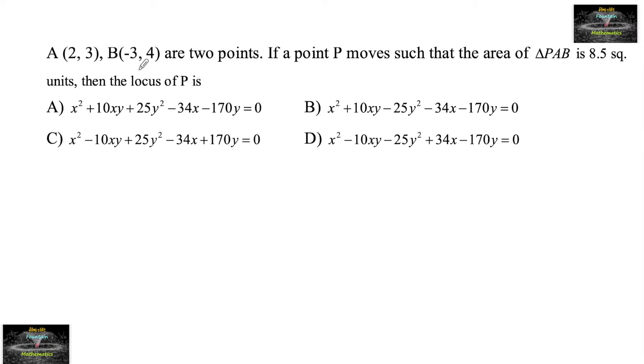Given A, B are two points. If a point P moves such that the area of triangle PAB is 8.5 square units, then find the locus of P.